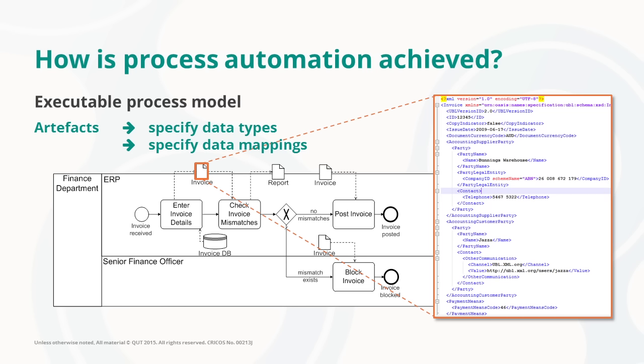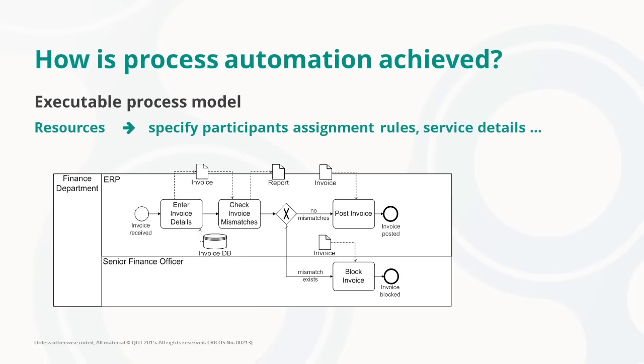Also, we need to specify the data mappings between process variables and task variables. This will allow the BPMS to pass control to a given task, for example by providing an invoice to the task enter invoice details, and then to receive control back from a task once the task has been completed, so that control can be pushed to the next activity.